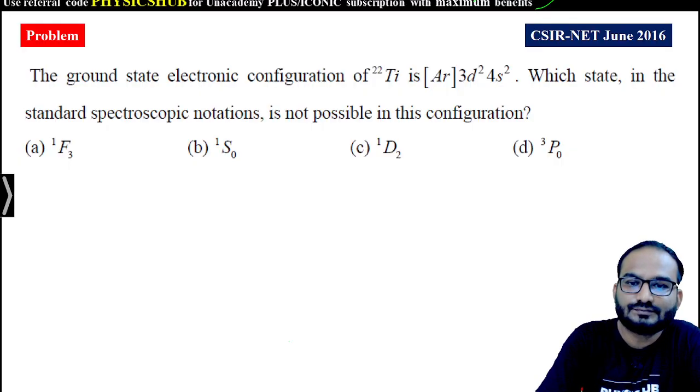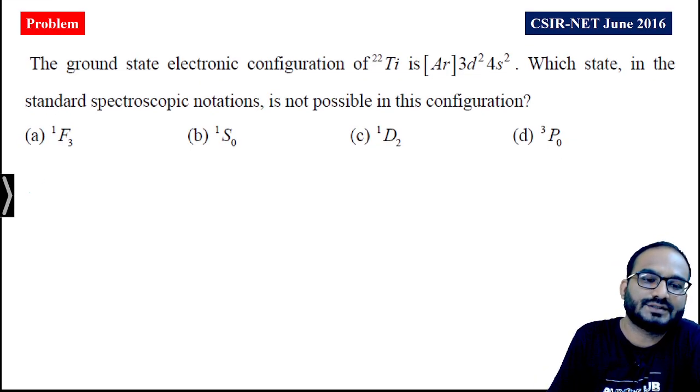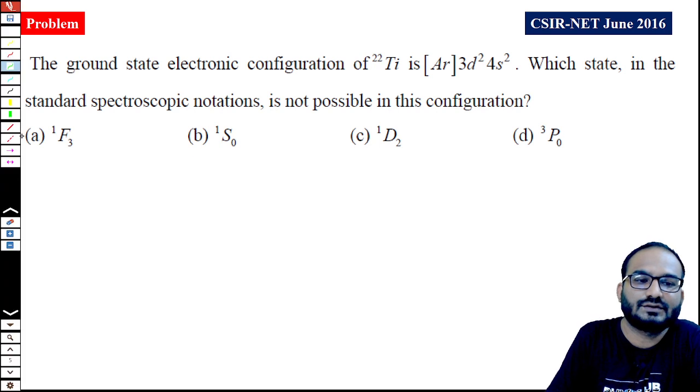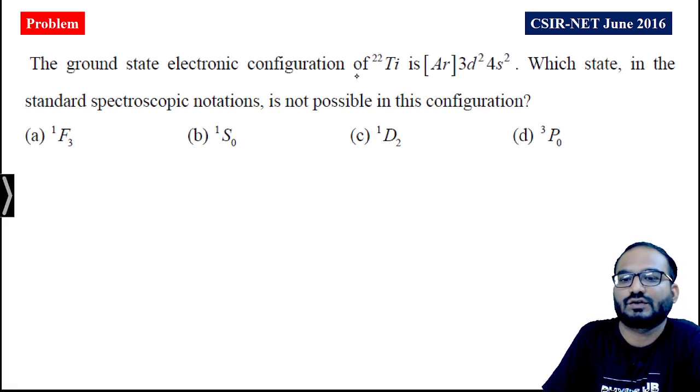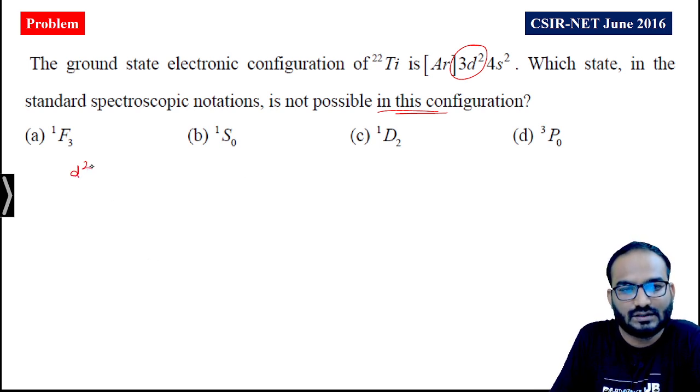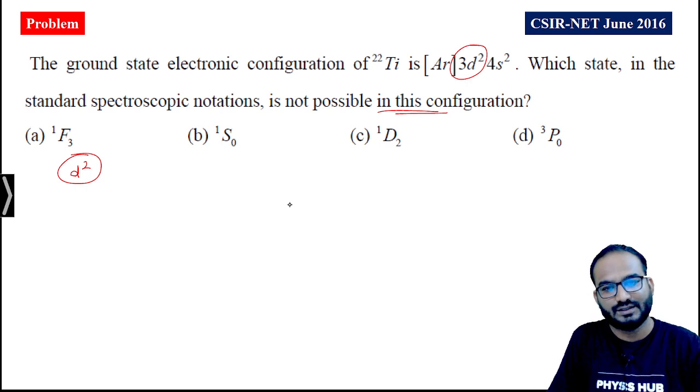One example - this question came in June 2016. Let us read this question: ground state electronic configuration for titanium-22 is 3d²4s². Which state is not possible for this configuration? The last one is D². That is what we have to consider. For D², we have calculated it.